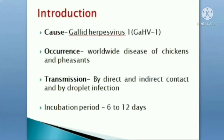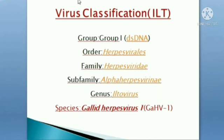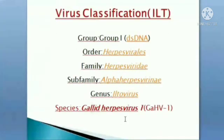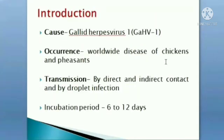Infectious Laryngotracheitis (ILT) is another important poultry disease caused by herpesvirus under the genus Iltovirus, species Gallid Herpesvirus 1. In Marek's disease we had Gallid Herpesvirus 2; Gallid Herpesvirus 1 causes ILT. It is a worldwide disease of chickens, transmitted by direct and indirect contact or aerosol routes, with an incubation period of generally 6 to 12 days.